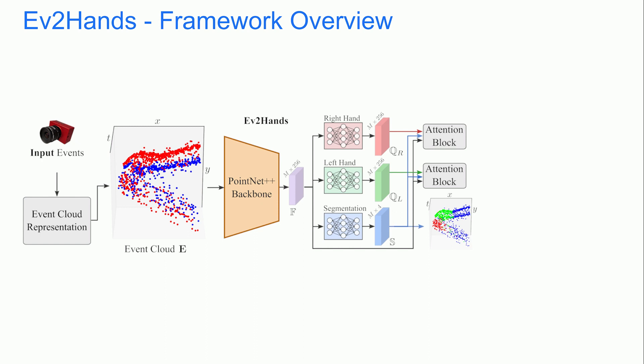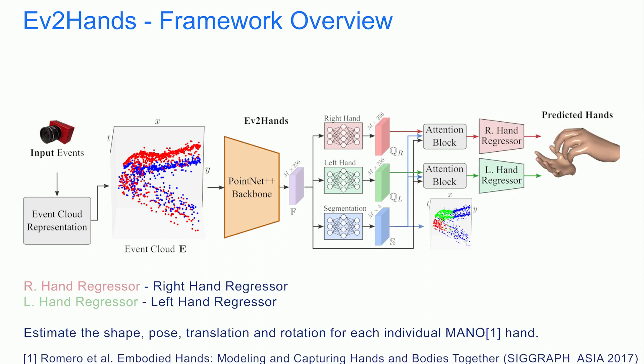In addition, the feature-wise attention mechanism refines the left-right segmentations by implicitly learning the event correspondences. Next, the weighted features are forwarded to the manual regressors to estimate the shape, pose, and translation and rotation for each hand.